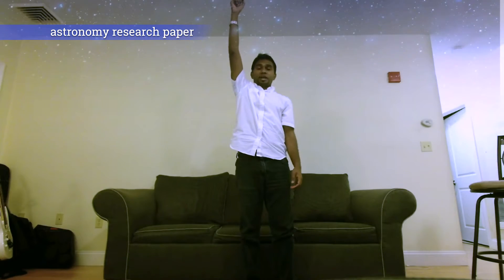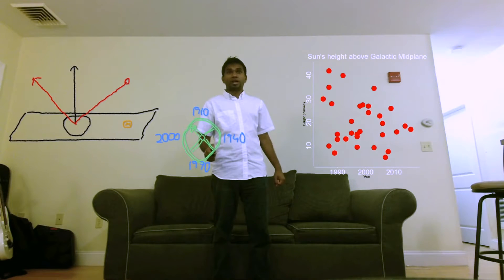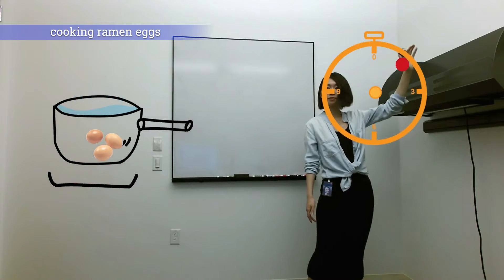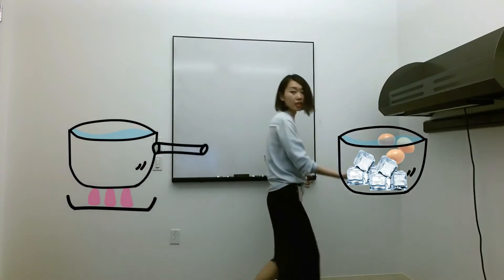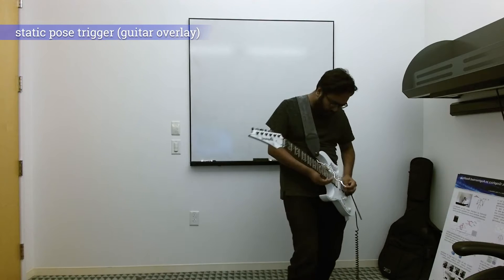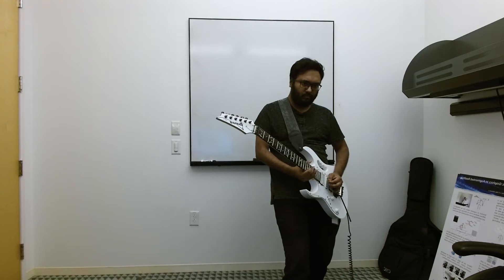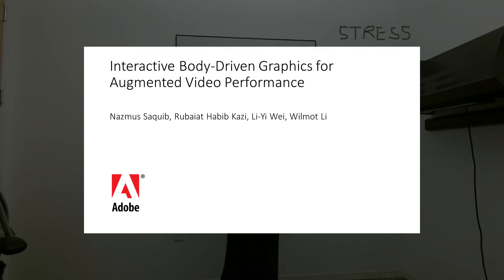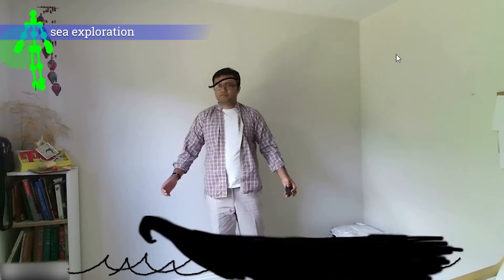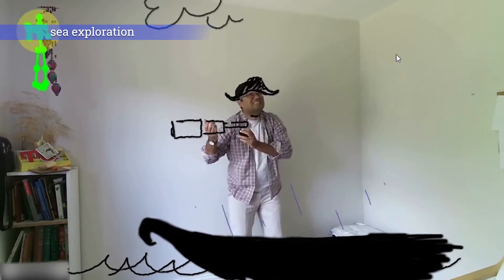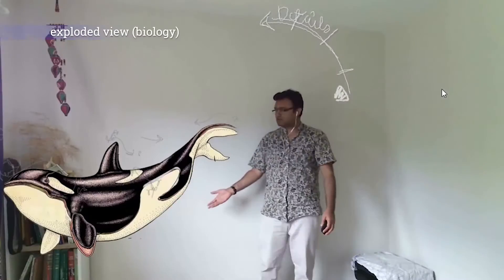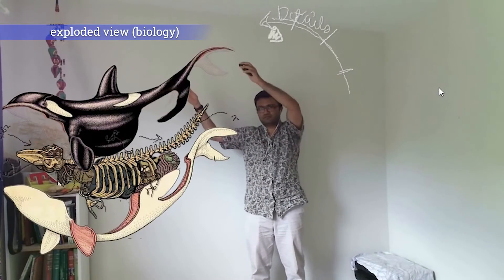Imagine you're presenting your research paper live while interacting with your data and drawings using your body, or live streaming interactive cooking tutorials, or performing live to an audience with electrifying guitar overlays. Our system allows you to map your body's natural gestures and postures to graphical elements in a scene, to design your own interactions and stories. We look beyond traditional presentation slides and pre-programmed augmented reality effects, and let you take charge of the elements in your slides literally, for the audience to immerse in your story.